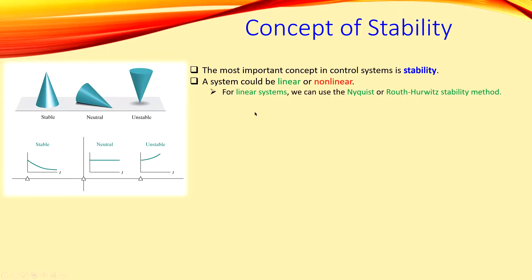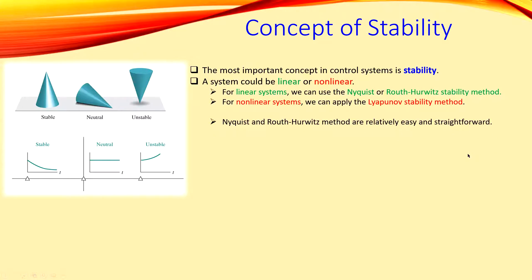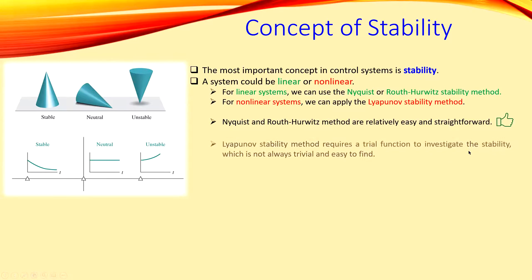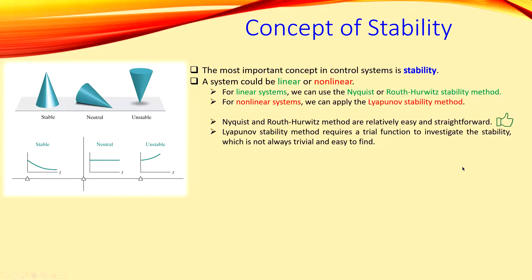For linear systems we can use Nyquist or the Routh-Hurwitz stability method. For non-linear systems we can apply the Lyapunov stability method, which is a little bit more complicated. Nyquist and the Routh-Hurwitz methods are relatively easy and straightforward. But if you need to work out a non-linear system stability, you can use the Lyapunov stability method, which requires a trial function to investigate the stability — and that is not always trivial or easy to find. This requires a lot of experience and is quite complicated.